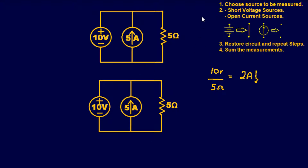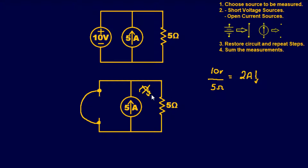Step three: restore the circuit and repeat the steps. Now we choose the current source. Step two: short the voltage source and open the current source not being measured. A common pitfall is thinking 5 amps will flow through the resistor, but current flows in the path of least resistance. Since there's a short, 5 amps flows through the short back into its own supply — 0 amps flows through the 5-ohm resistor.